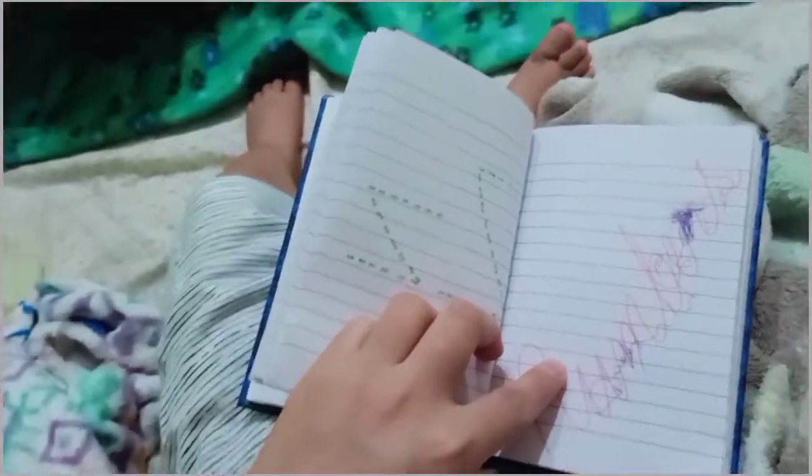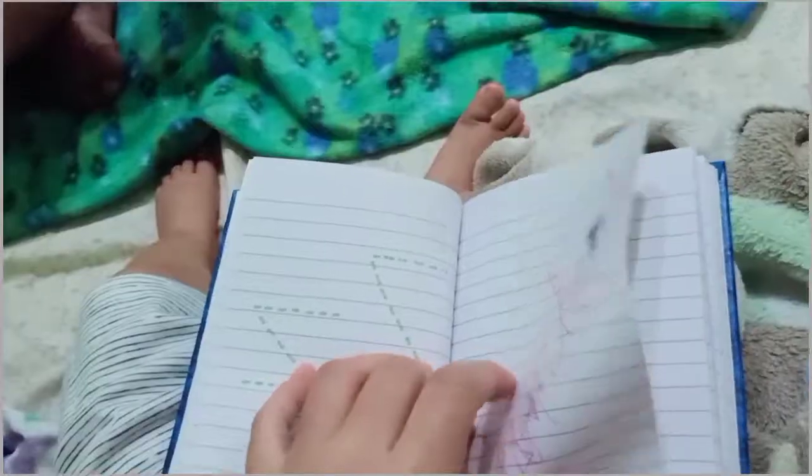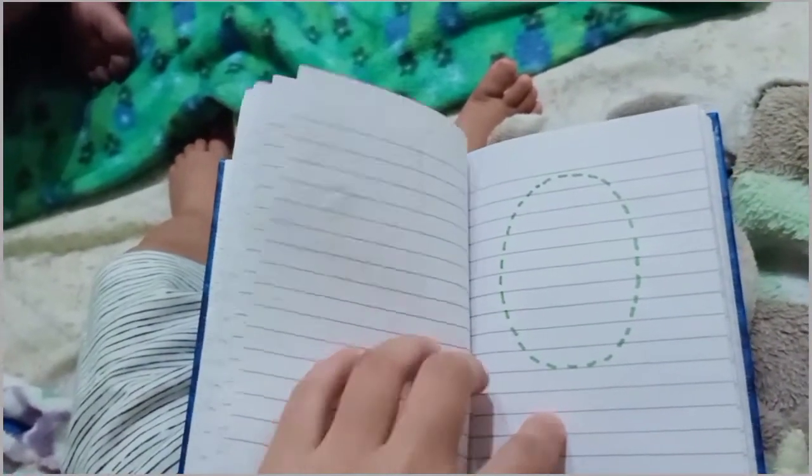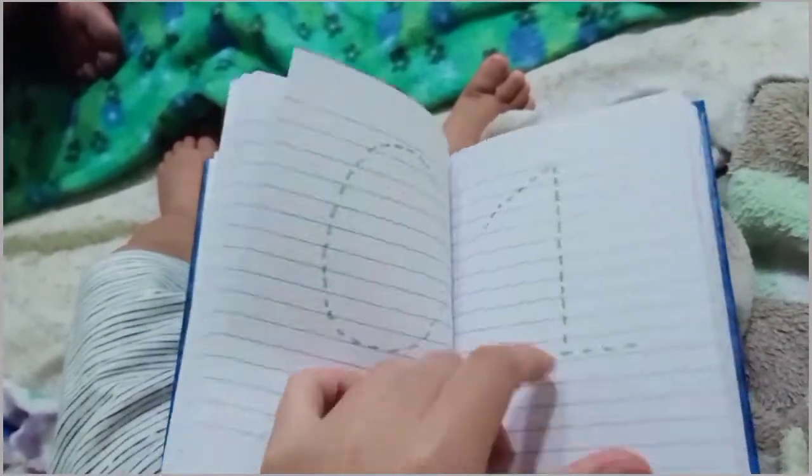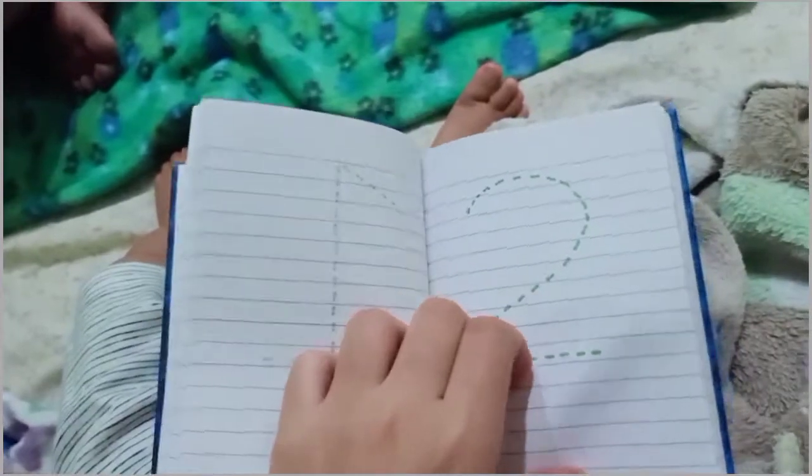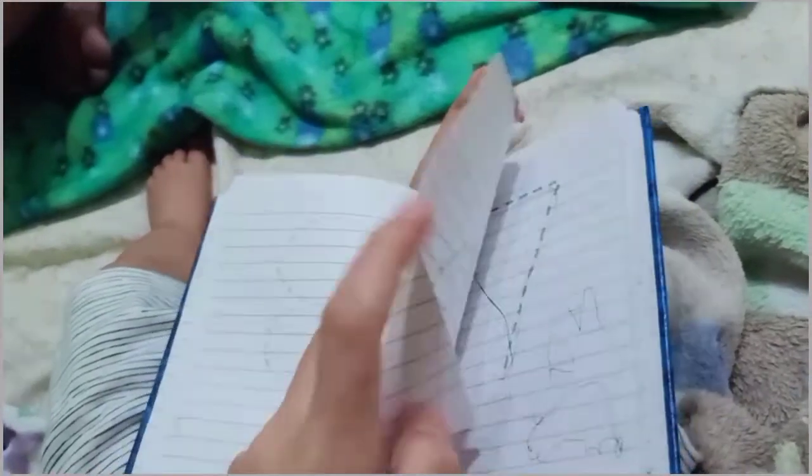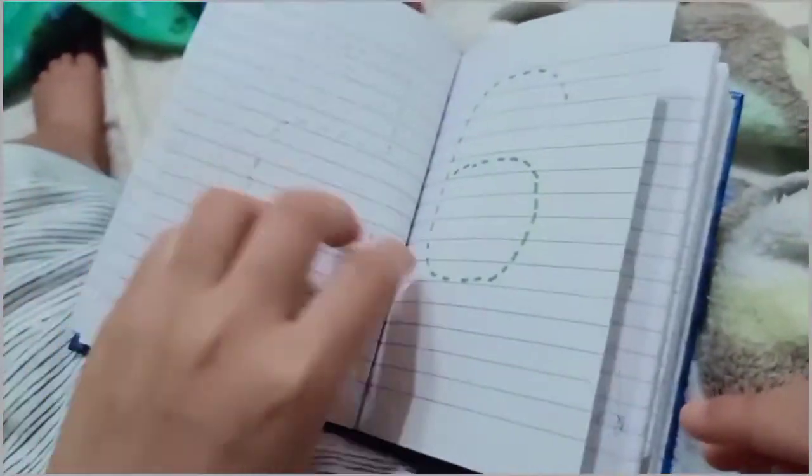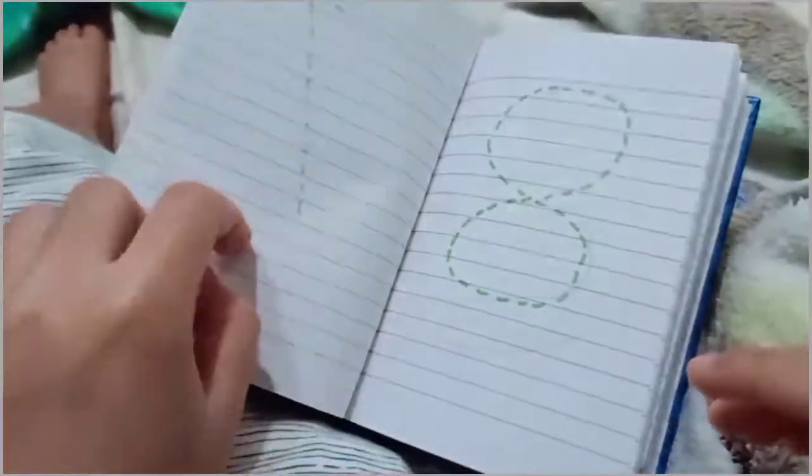Next is the number. Say it fast, okay? What number? Zero. Zero. One. Two. Three. Three. Very good. Four. Five. Six. Seven. Eight.